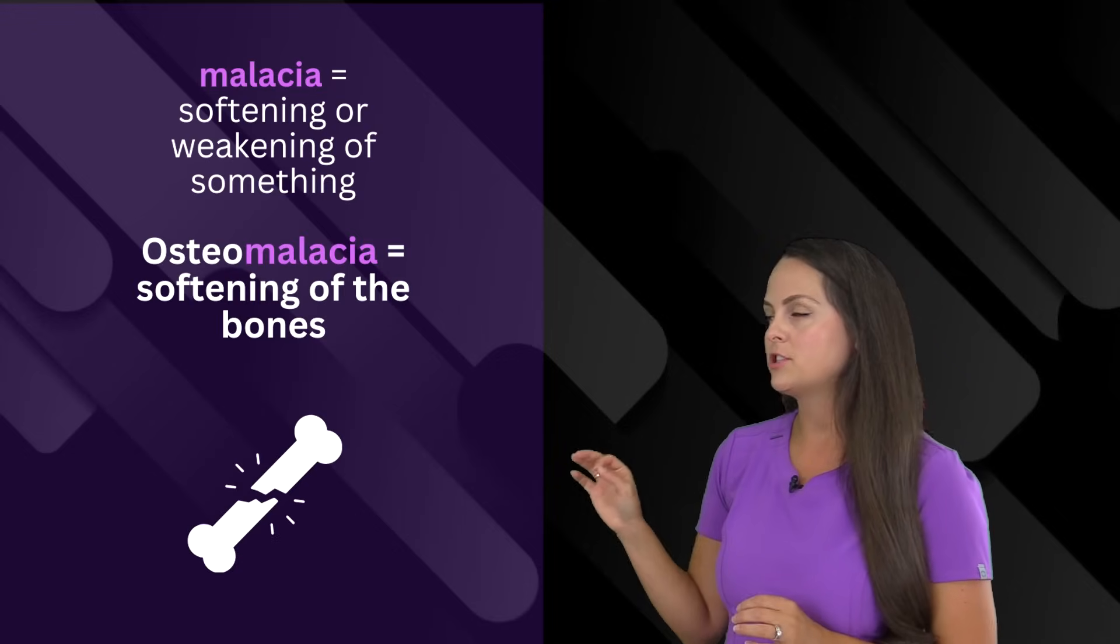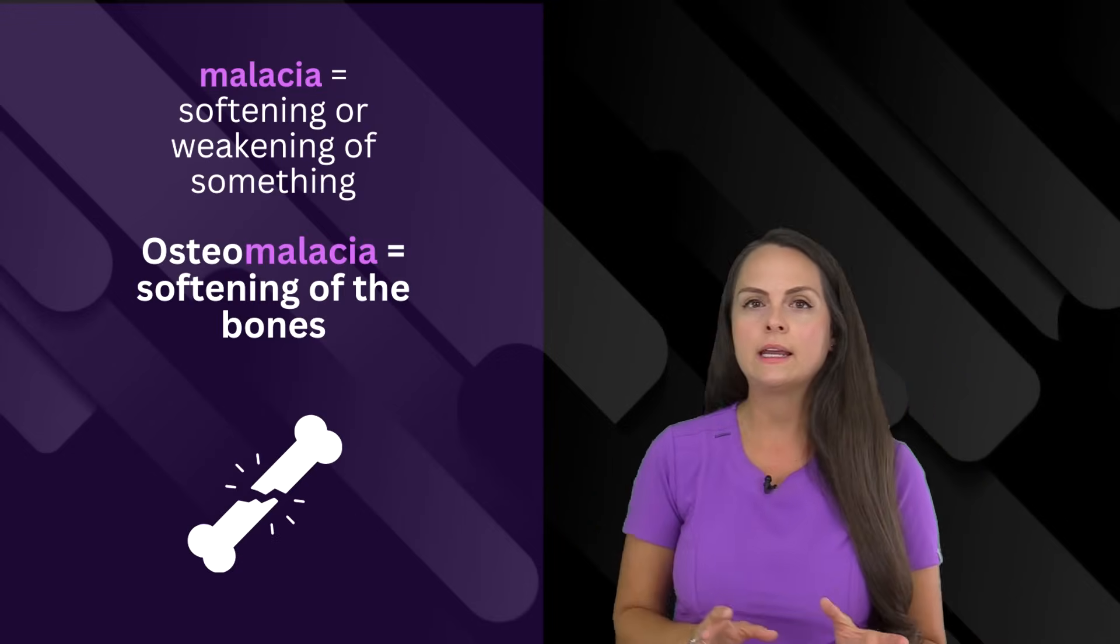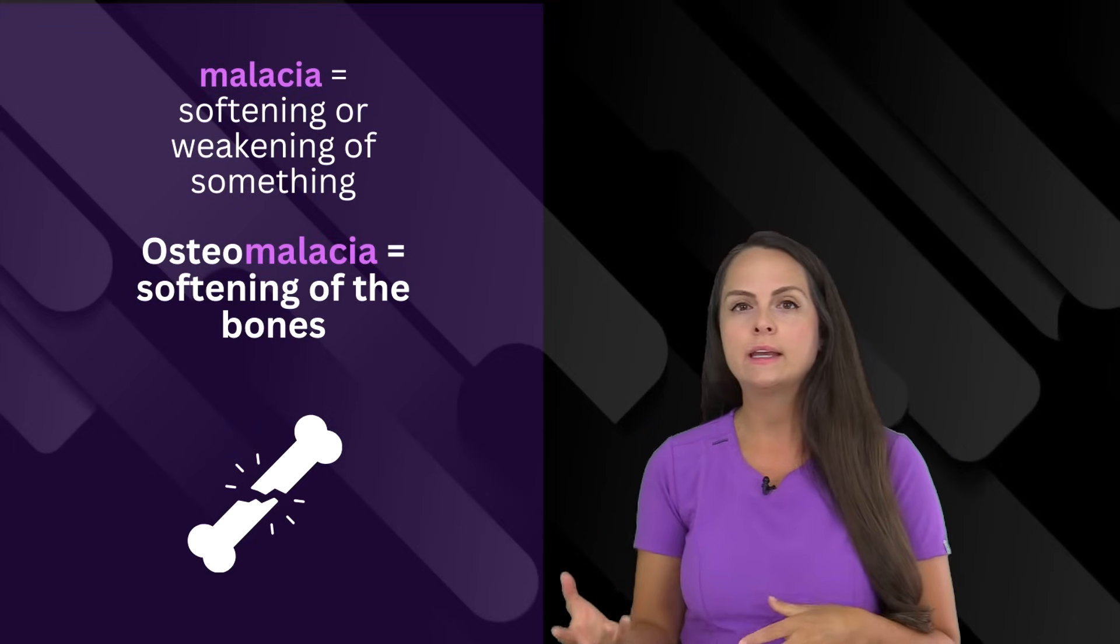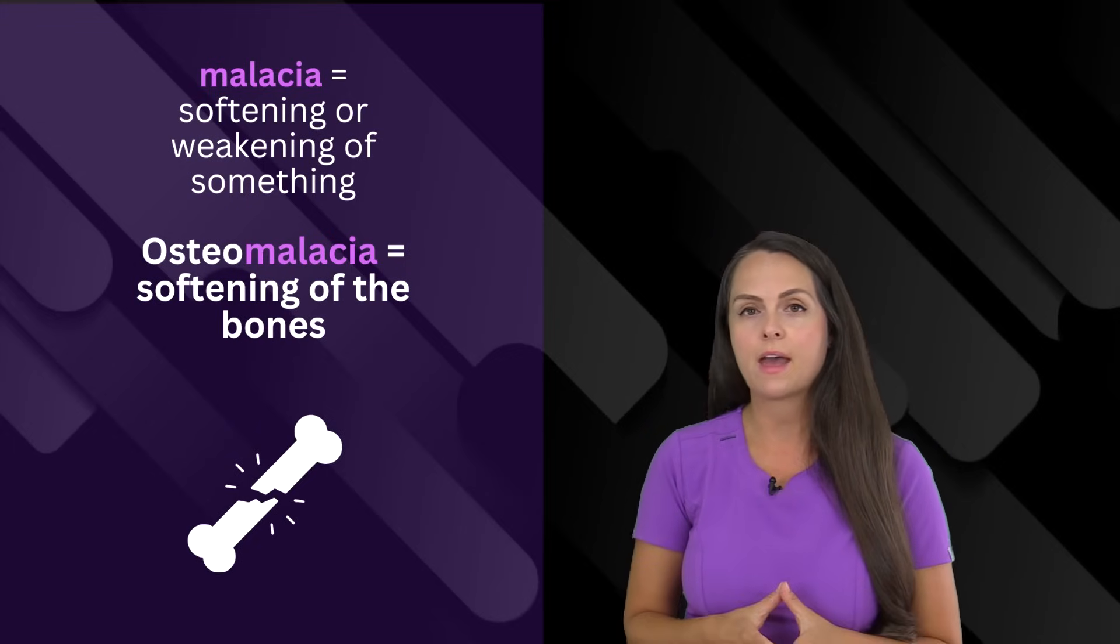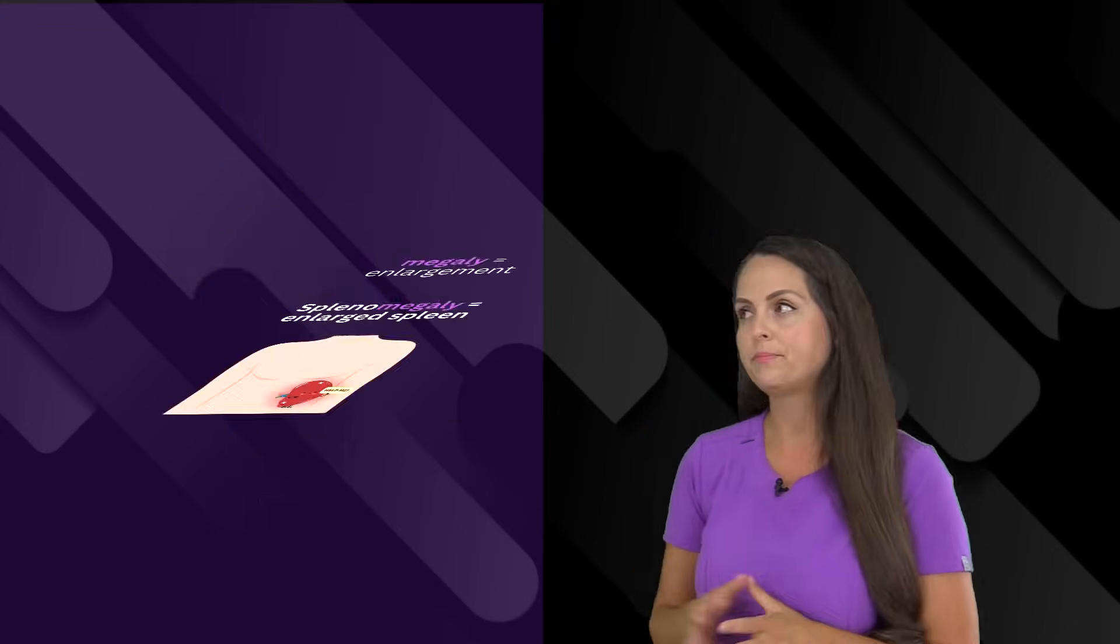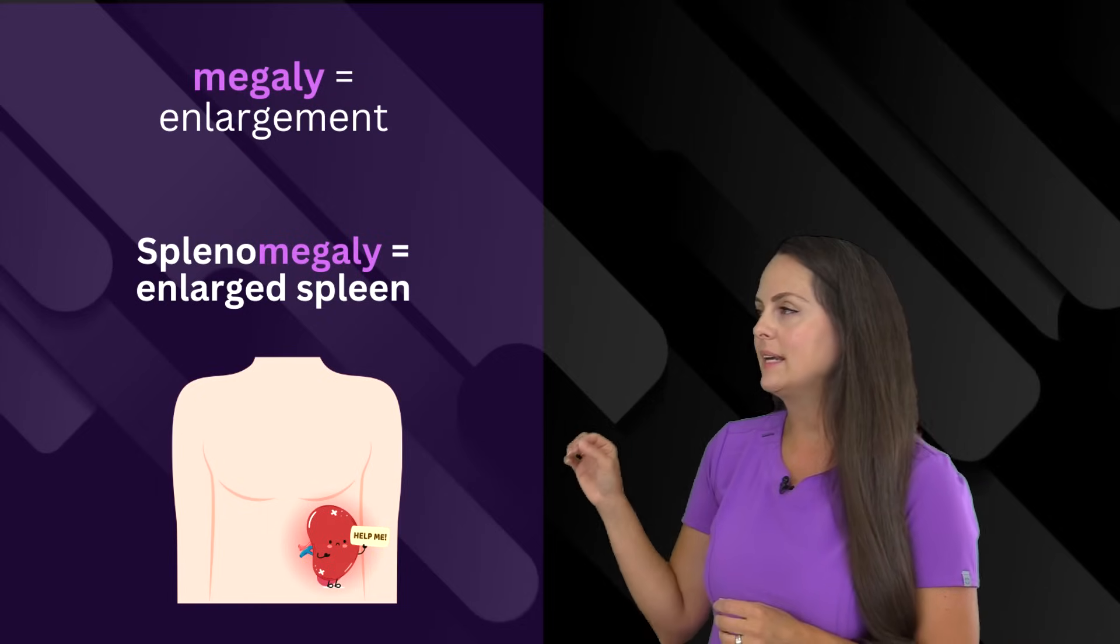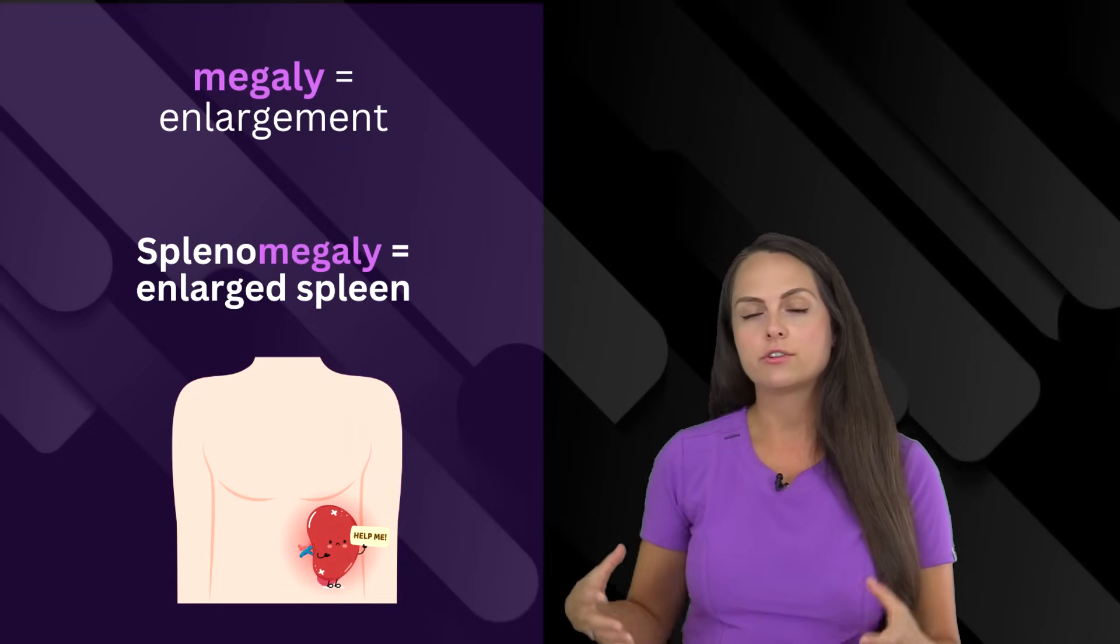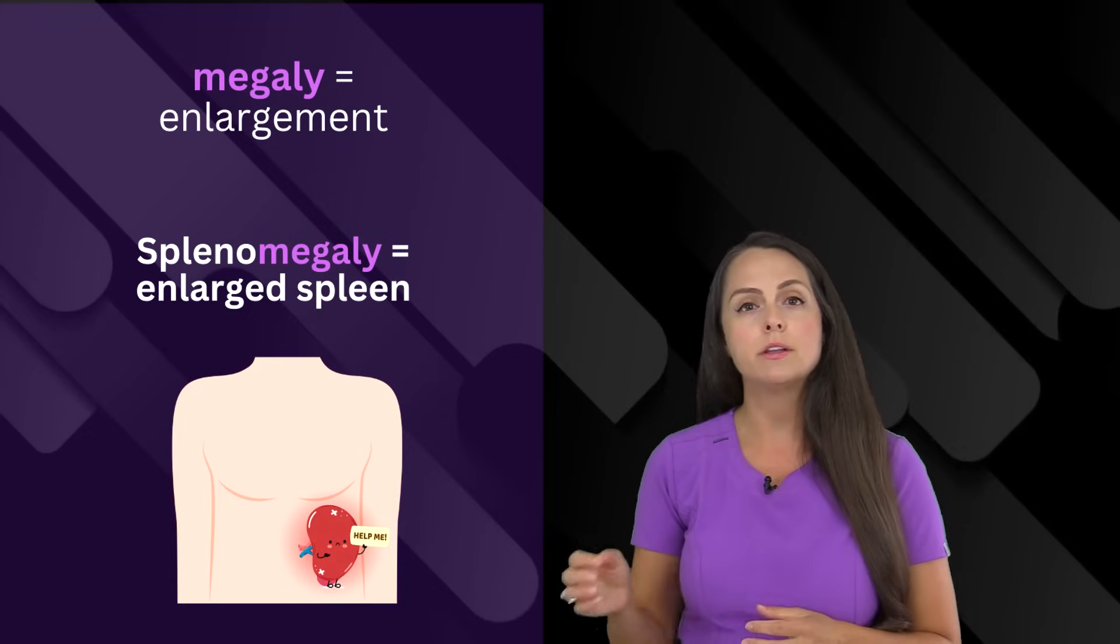Then we have malacia. This means the weakening or softening of something. If someone has the weakening or softening of bones, we would term that as osteomalacia. Next, we have megaly. This means enlargement. Sometimes a patient can get enlargement of their spleen. And this is termed splenomegaly.